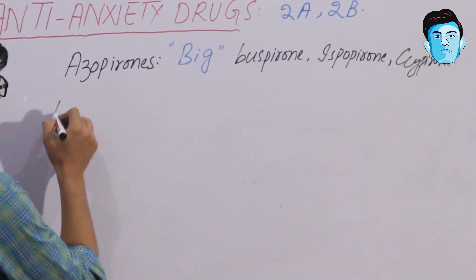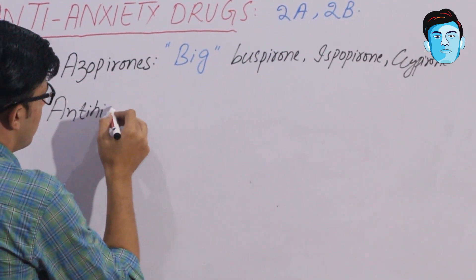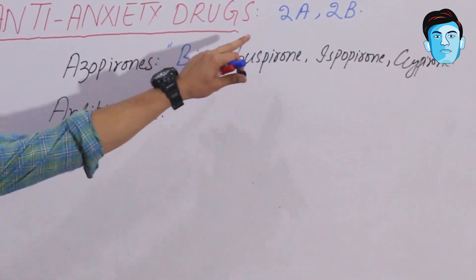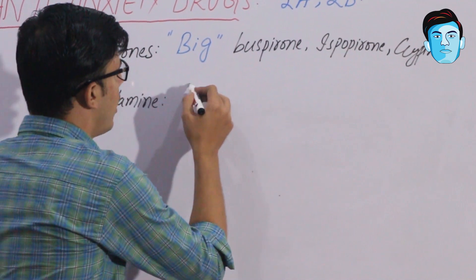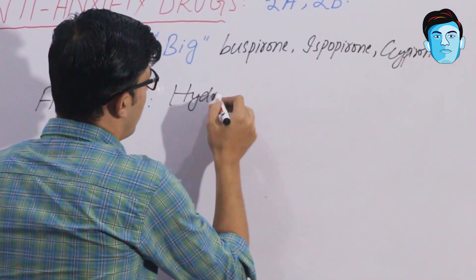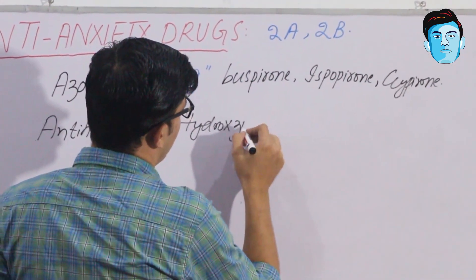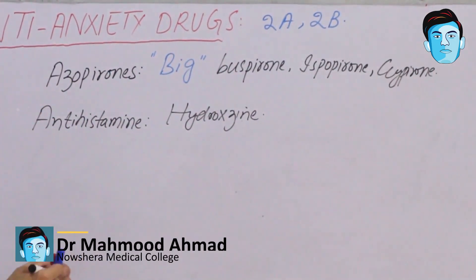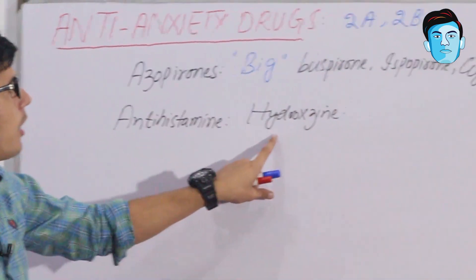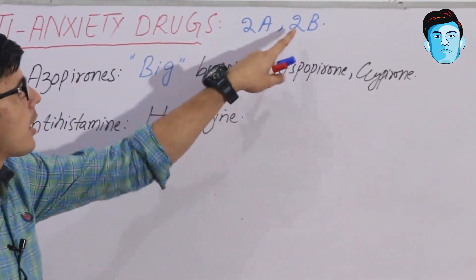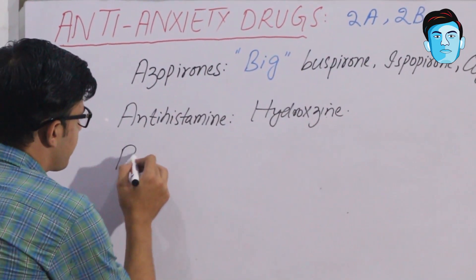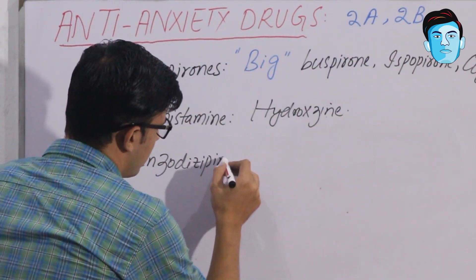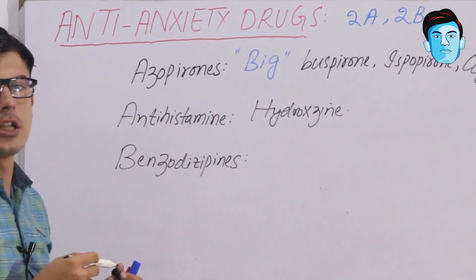The second A stands for antihistaminics. In this class we have hydroxyzine. Now let's talk about B — B stands for benzodiazepines. For benzodiazepines we have a trick called OLD AC.